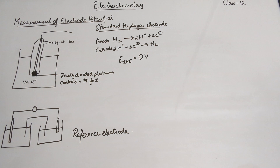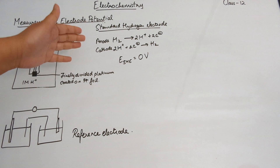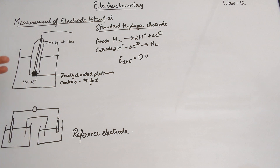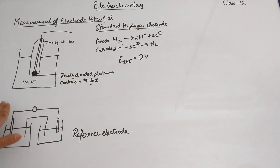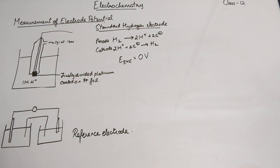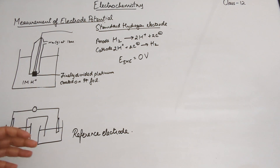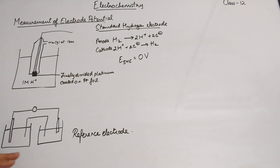The SHE can act as both anode and cathode. When it acts as an anode it loses H⁺; when it acts as a cathode it gains two electrons and undergoes reduction. Because the concentration stays at one molar and the hydrogen gas pressure stays at one bar, the electrode potential of the SHE is considered to be zero volts. We connect it with the other half cell whose potential we want to calculate, and the result is known as the standard electrode potential.